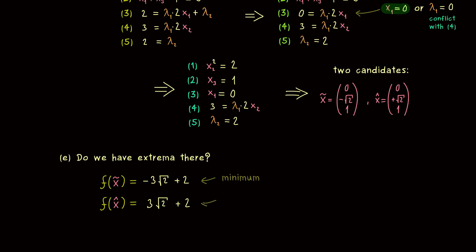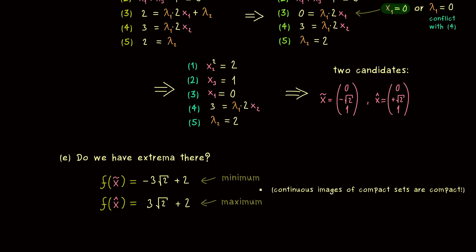We know these are the true minimum and maximum because f must take its minimum and maximum on the compact set G — continuous images of compact sets are compact. The function f is continuous and the constraint G is a compact set, so f under the constraint must have a maximum and a minimum. Since we only have two candidates, the lower value is the minimum and the higher value is the maximum. That's the whole example calculation for the method of Lagrange multipliers. In the next video, I want to show how we can simplify the method. Hope to see you there — have a nice day!